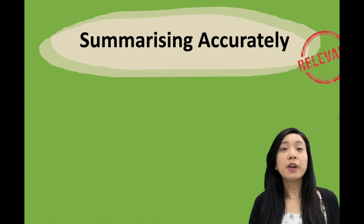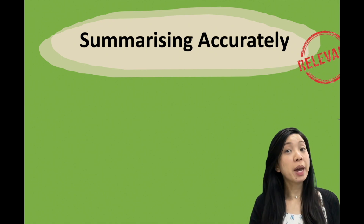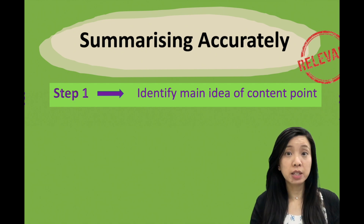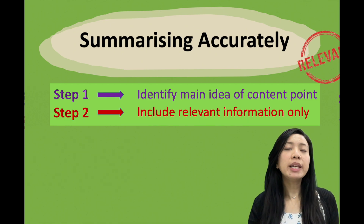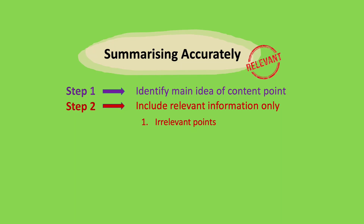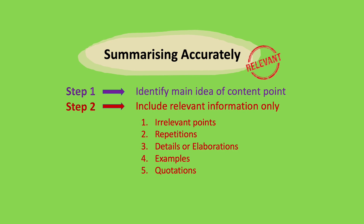So let's get into our strategy of how to summarize accurately — that means to exclude things that we do not need in our summary paragraph. For the first step, we need to identify the main idea of the content point. Secondly, we need to include only relevant information. The things we can leave out are: irrelevant points, repetitions, details or elaborations, examples (unless the question asks for them), quotations, and redundant words.